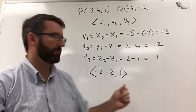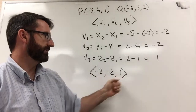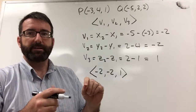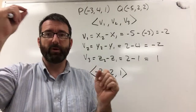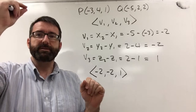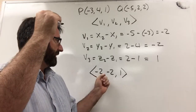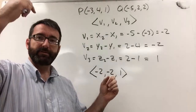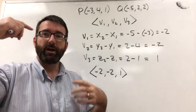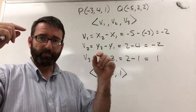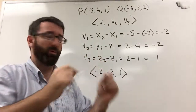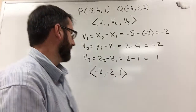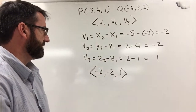What this component form means is that the vector starts at some initial point — it doesn't matter where — and goes negative 2 on the x-axis, negative 2 on the y-axis, and up 1 on the z-axis. If you go from that initial point to the point you'd reach, that's your vector. So that's the component form of this vector.